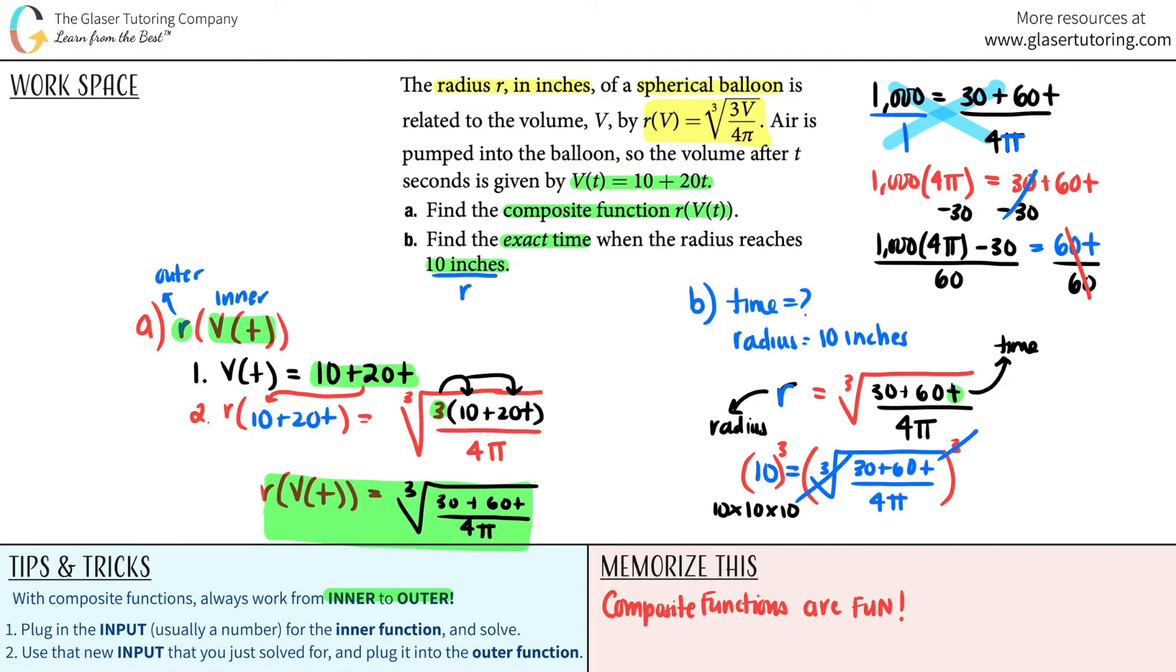So I'm just going to do it in one shot, but the answer should be exactly the same. I'm going to put the t over here. So in the calculator, I'm going to say 1,000 times 4 times π minus 30, that whole thing, then divide by 60.